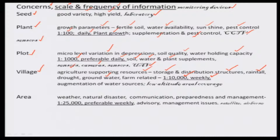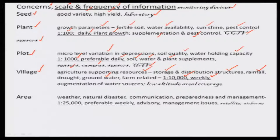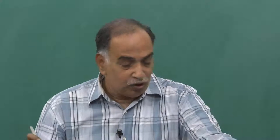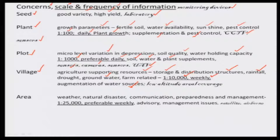Augmentation of water resources means increasing storage — either by increasing existing storage or constructing a new local structure to get additional quantum of water. The type of monitoring device needed for this is low-altitude aerial coverage — it can be an unmanned vehicle or low-flying aircraft. The aerial extent means a group of villages together. Important aspects here are weather — temperature variations and rainfall variations — as well as natural disasters. Depending upon the physiographic condition, it could be drought or heavy rainfall.